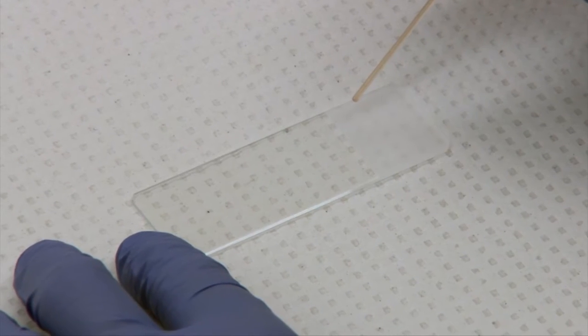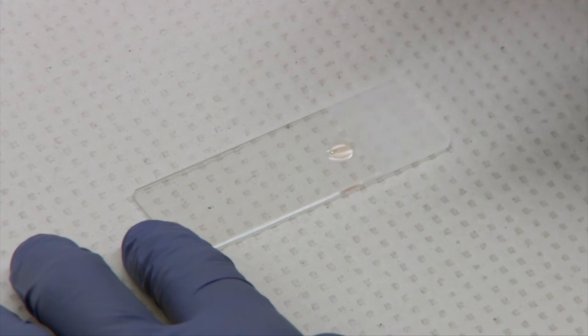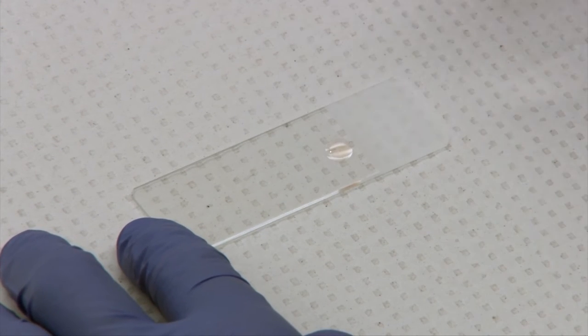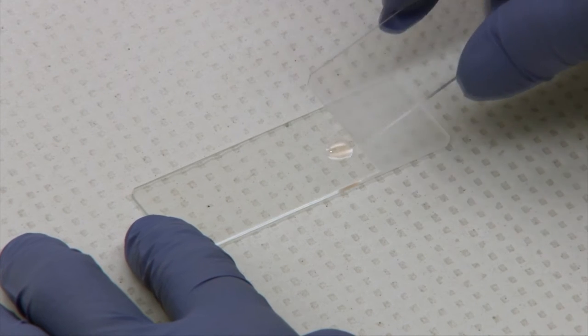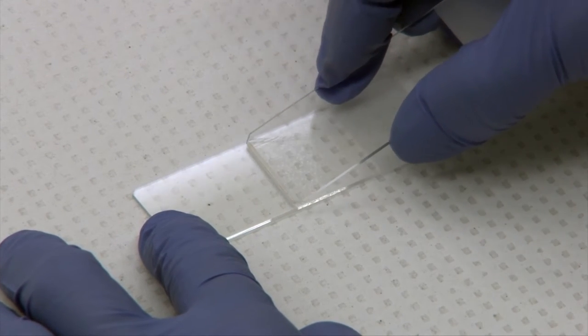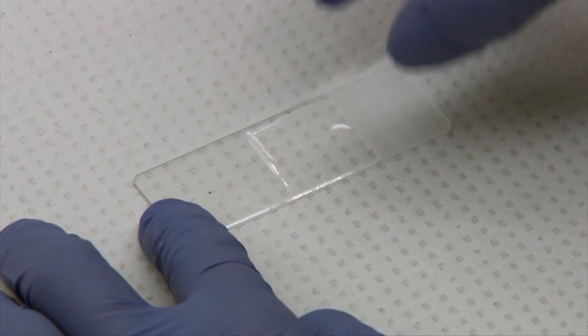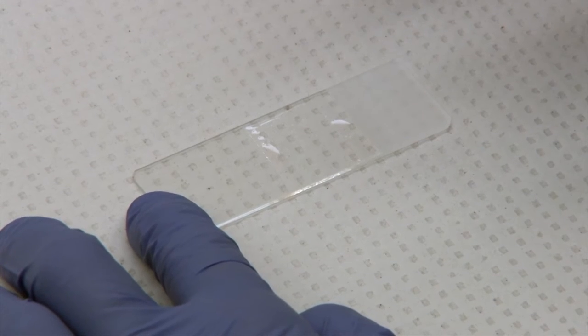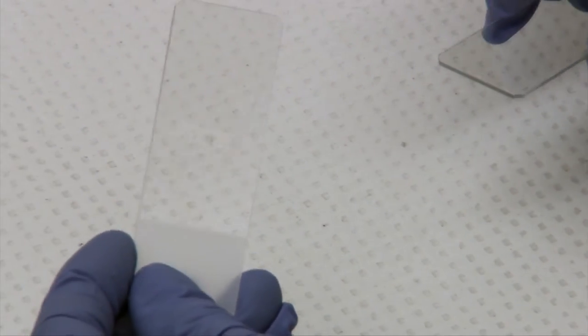And then you will make a line preparation. So this is demonstrating the line preparation which can be used to concentrate cells. And you start out like a blood smear and you just lift it straight up after going about halfway down your slide. And then you will see that you have a line.